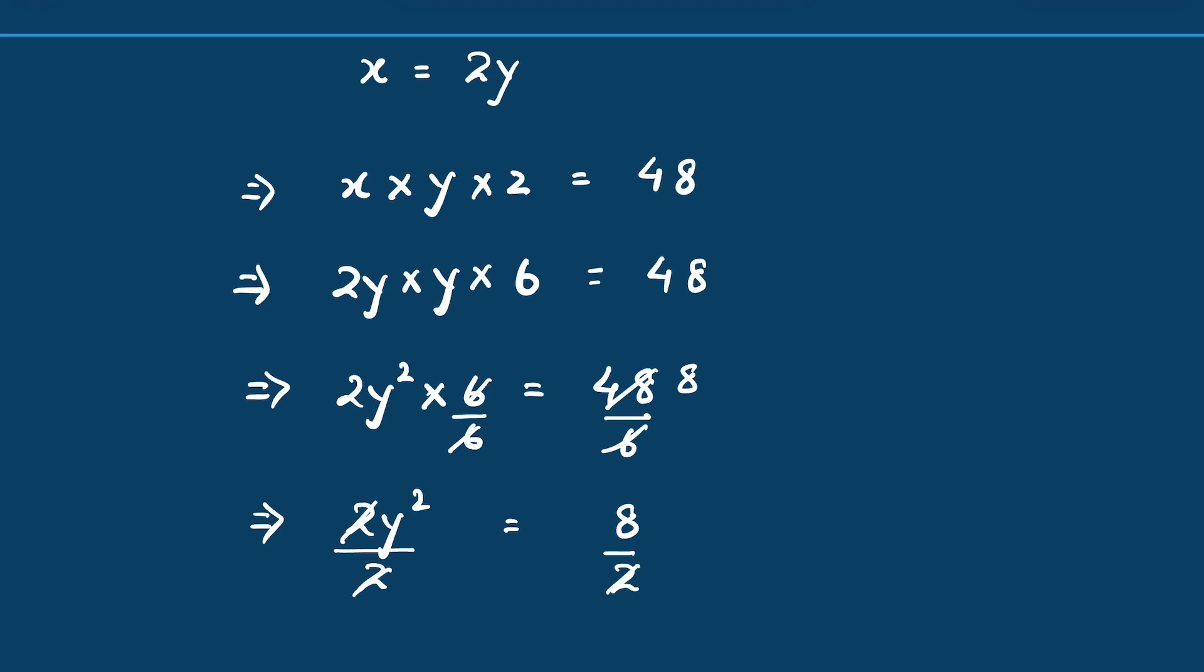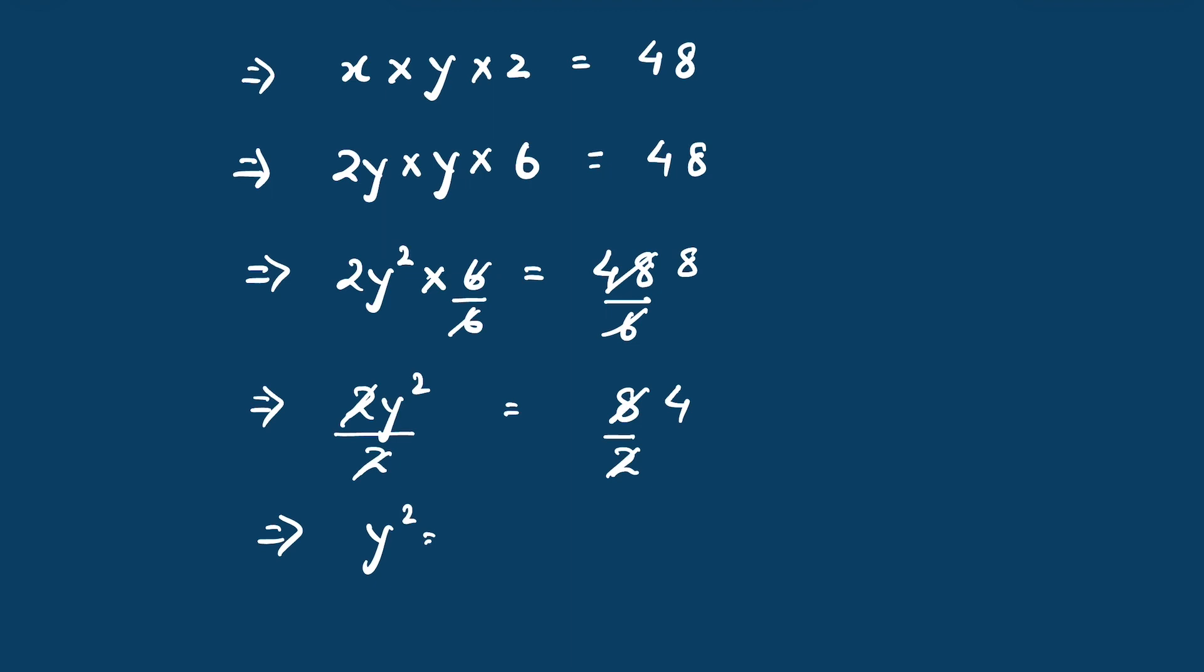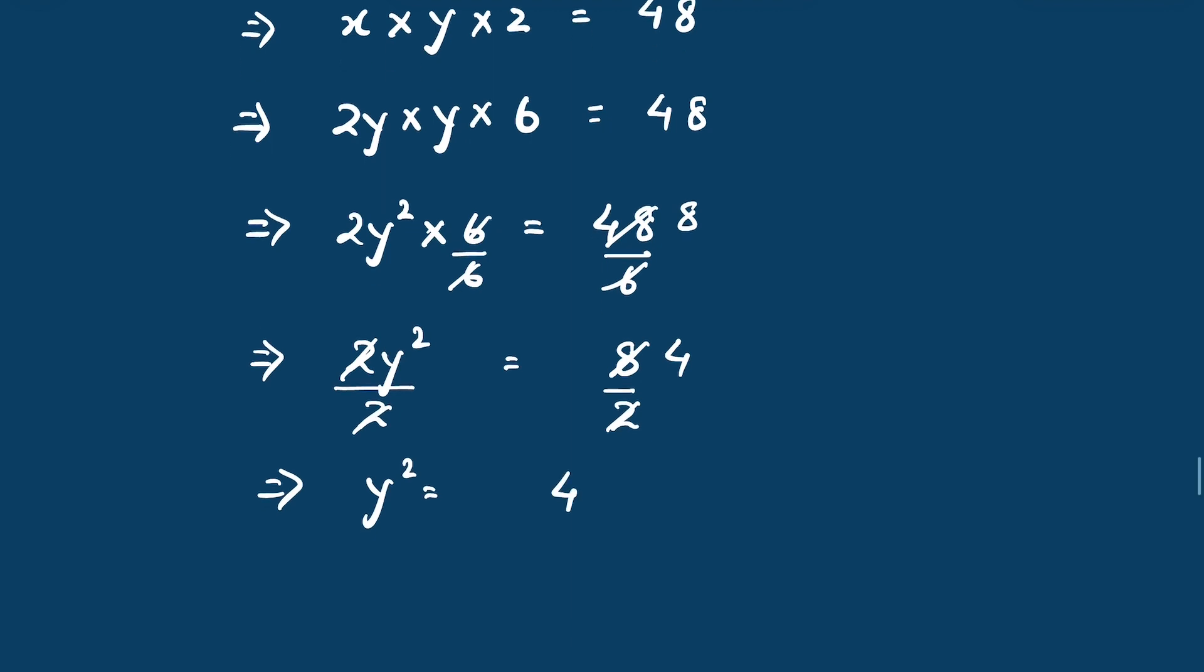To remove the square from this side, let's take the square root of both sides. So square root and square cancel, y equals 2 (or plus/minus 2). So the second number is 2.